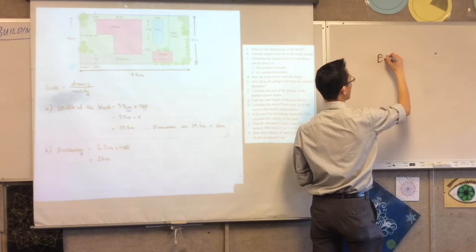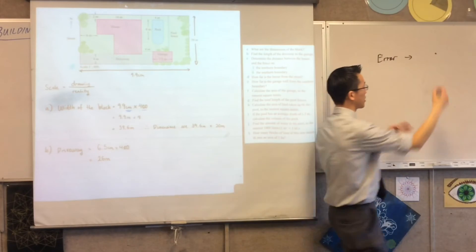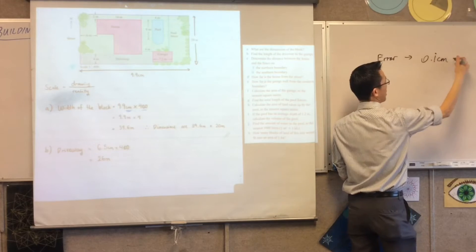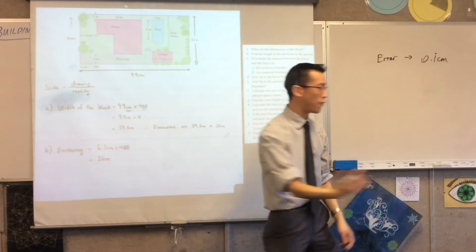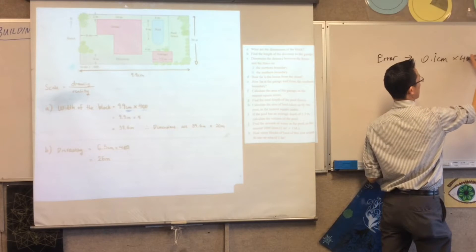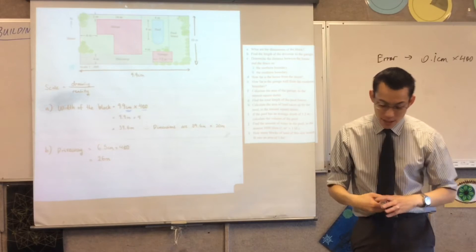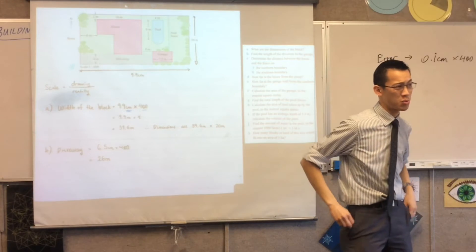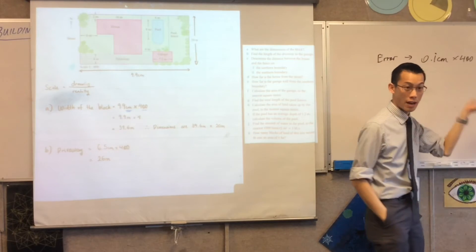Off by one millimeter here but I multiply that by 400. The error in the measured drawing, it's going to be 0.1 centimeters, which is inconvenient, but when I multiply it by 400 that's going to be 40 centimeters. So therefore you might get 26 meters or you might get 25.6 meters and they're both within that error.